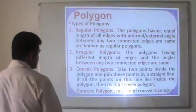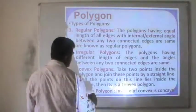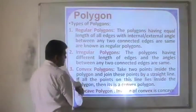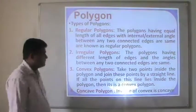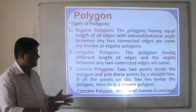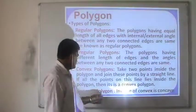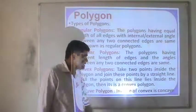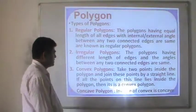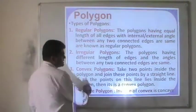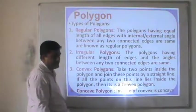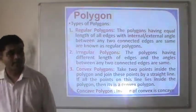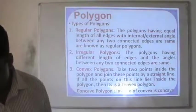In the next case, for a convex polygon, take two points inside the polygon and join these two points by a straight line. If all the points on this line lie inside the polygon, then it is said to be convex. If the inverse is there, then it is called a concave polygon.